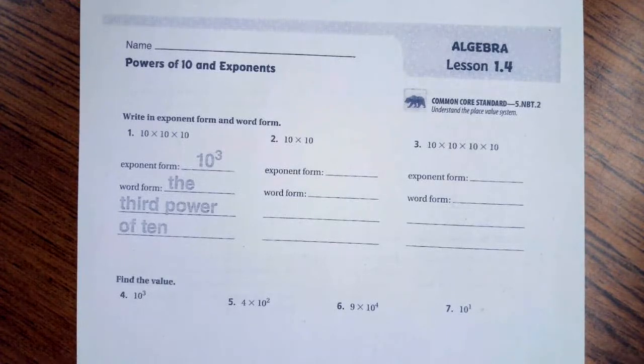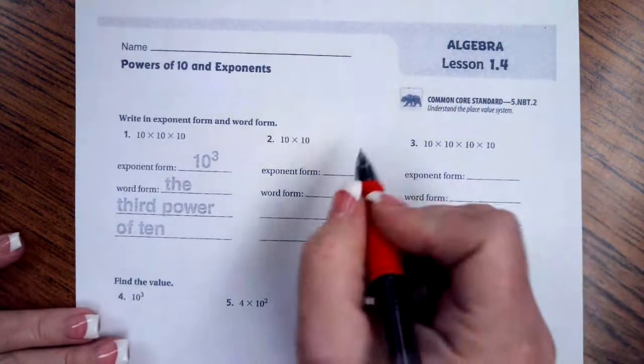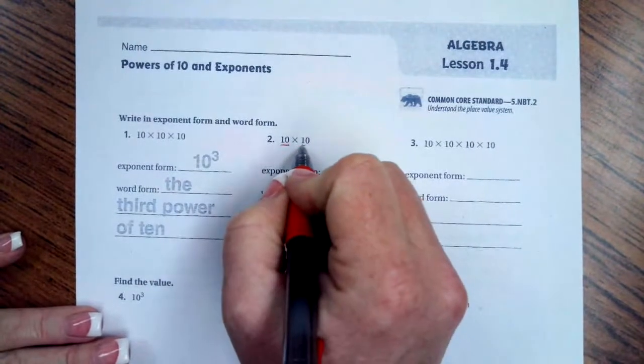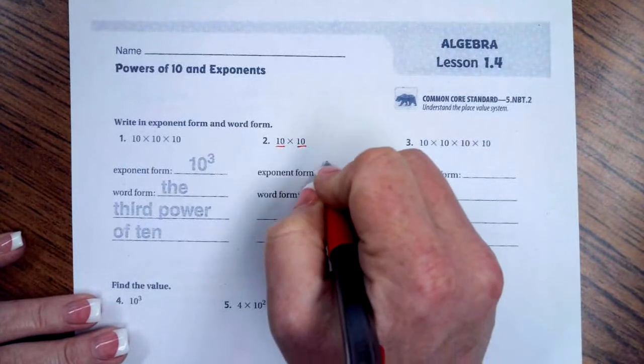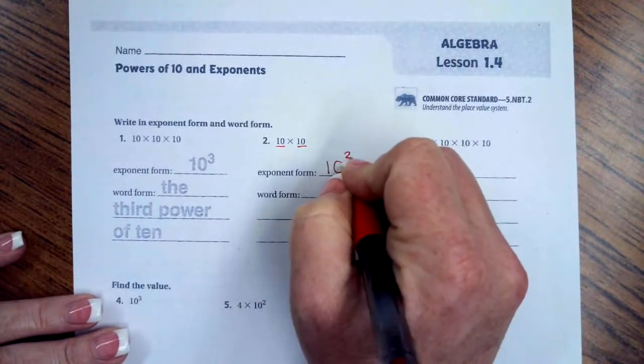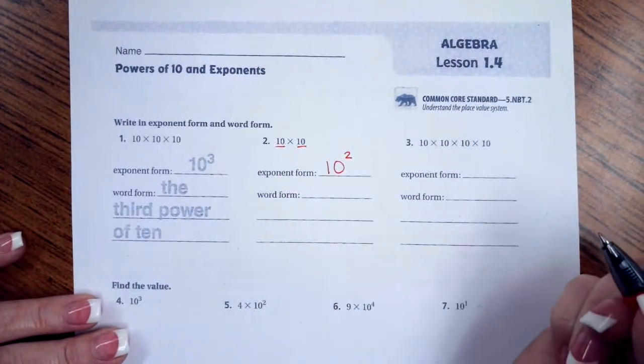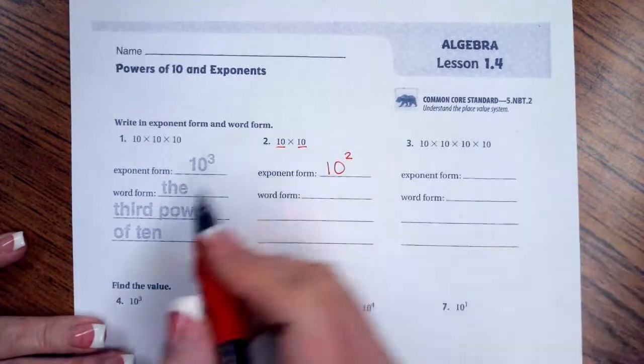Hi guys, welcome to fifth grade chapter one, lesson four. We're going to get started with number two. All we have to do is count the number of tens, which is two, which means it will be ten with an exponent of two. So in word form, just like this example, it's going to be the second power of ten.